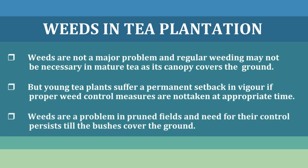Weeds are a problem in prune fields and need to be controlled till the bushes cover the ground. When weed competition is more, there are some critical periods of weed competition in the tea garden. In the case of Assam, a state of Northeastern India, the critical period of weed competition is between April and September, that is, during the monsoon.